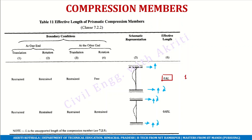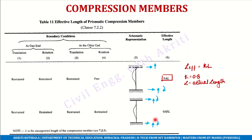So the formula is: effective length L_eff equals K times L. To use this, you look at the end conditions from Table 11 and that directly gives you the effective length. You have to look at the end conditions, and that gives you the effective length.